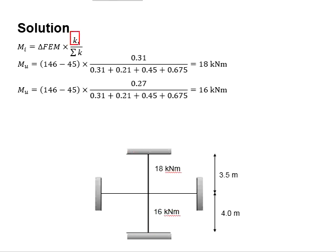First, you need to determine the differences between the fixed end moments, which is equal to 146 minus 45, to be multiplied with each stiffness divided by the total stiffness of this joint.